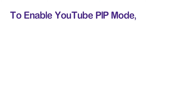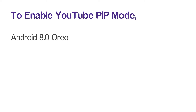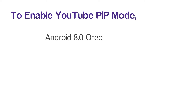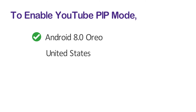To enable YouTube PIP mode, your phone needs to meet some criteria. First of all, your phone should be running Android 8.0 Oreo or above. Secondly, the PIP mode is currently available in the US only.